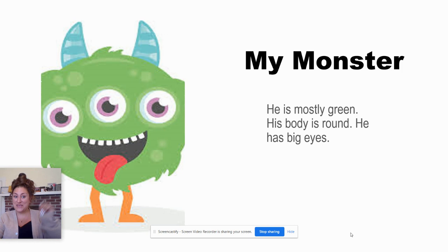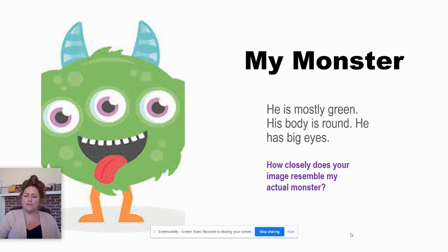So meet my monster. As you can see, he's mostly green. His body is round and he has big eyes. How closely does the image that you drew resemble my actual monster? Does it look exactly like him?